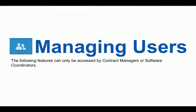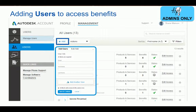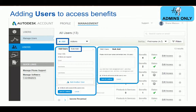Now we're going to explore managing users, how to add them, and assigning benefits so that your users can access your products and services. The following features can only be accessed by contract managers or software coordinators. As a contract manager or software coordinator, you can add users by going to the Users icon, then clicking Add, and filling out the fields for name and email address. You can add a single user this way, or use the Bulk Add option to add up to 50 users at a time. Once you click Save, those users will receive an email noting their access has changed, and they will be prompted to log in. Until they do, there will be a gray circle next to their name noting a pending status; once logged in, the status changes to a green checkmark.